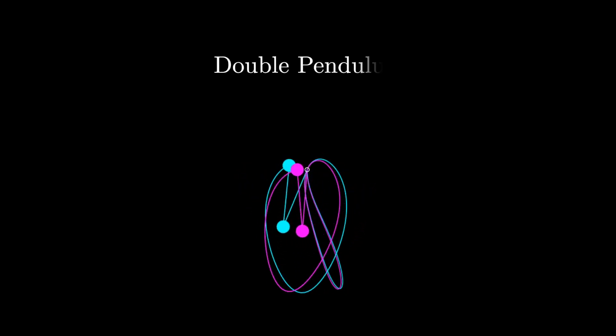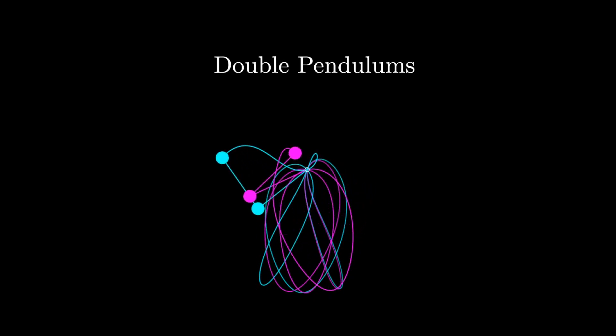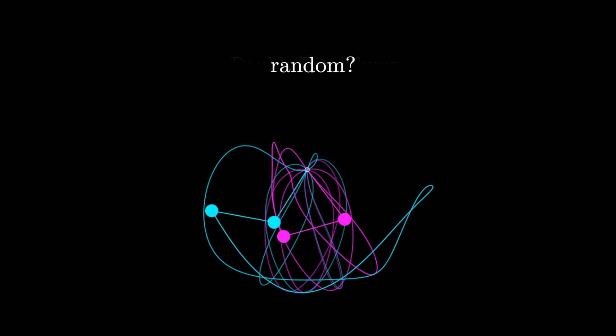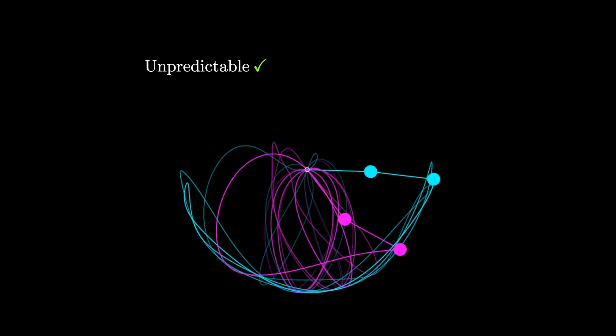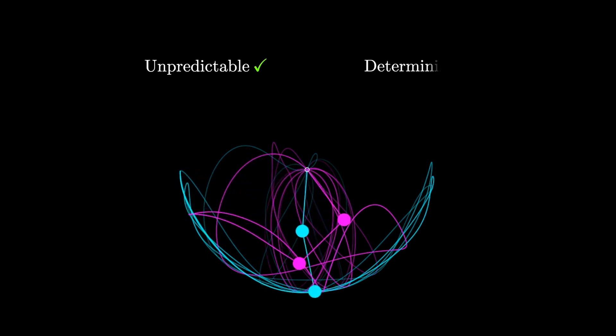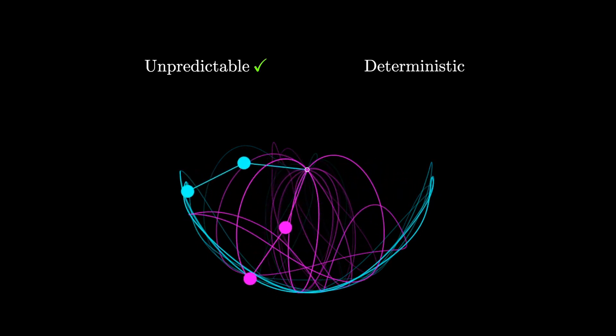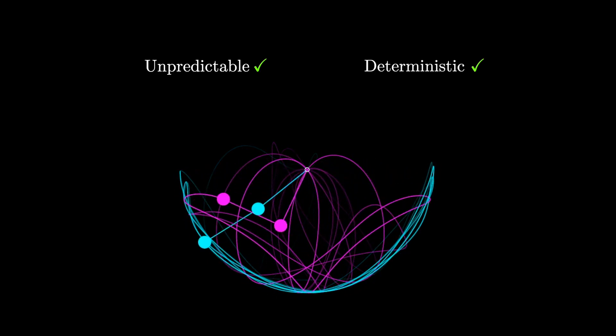This video will be all about double pendulums. These fascinating physical systems can seem random, but in fact illustrate one of the most counterintuitive ideas in all of physics and mathematics. A system can be unpredictable, yet still entirely deterministic.